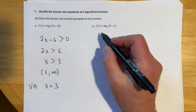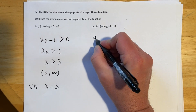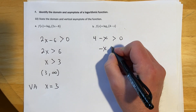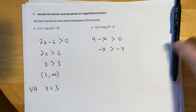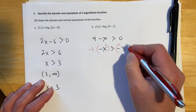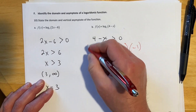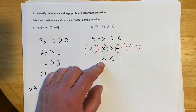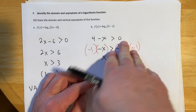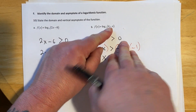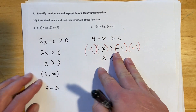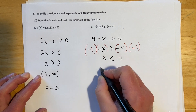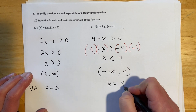For log of (4 - x): set 4 - x > 0, bring the 4 over to get -x > -4. Multiplying both sides by -1 reverses the inequality, so x < 4. This one has been reflected (there's a negative on the x inside), which is a reflection across the y-axis. The domain is (-∞, 4) with a vertical asymptote at x = 4.